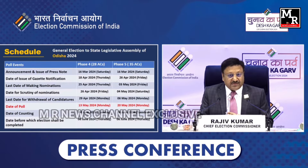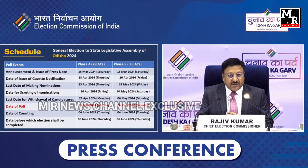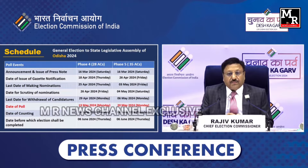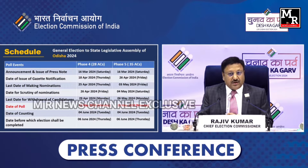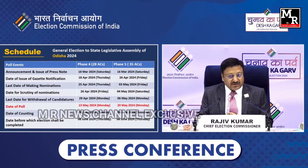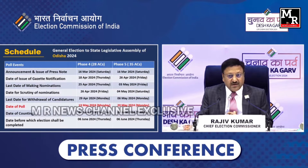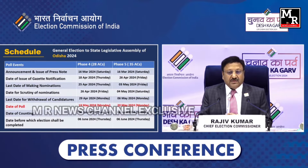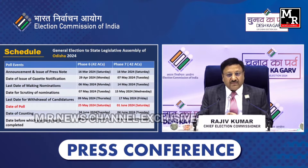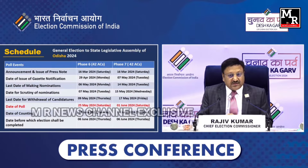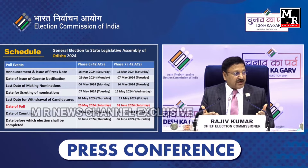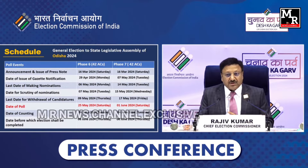For Odisha, the first notification will be 18th April and this will be conducted in phases. The first phase date of poll would be 13th May. The second phase of the assembly of Odisha — 26th April notification, 20th May date of poll. Then the sixth phase and seventh phase also — Odisha would have assembly elections. Sixth phase: 29th April notification, 25th May date of poll. We are sharing all this with you so that it is easy for you to write and report.